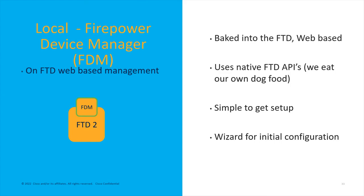You also have the option of a local manager — a web-based manager that sits on and operates on the Firepower itself. The cool thing about it is it uses the native FTD APIs. In other words, Cisco eats its own dog food: the APIs you might want to use for automation are very well developed because Cisco itself relies on them for automation and configuration through this local manager. The big advantage is it's simpler to set up. You throw the box out there, log into its web port, get a simple wizard for initial configuration, and you're done.